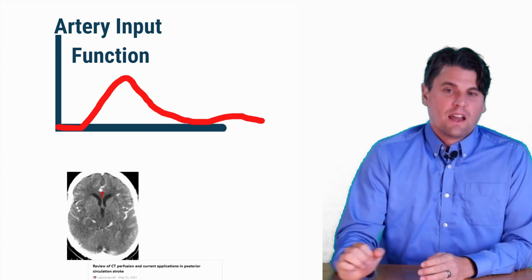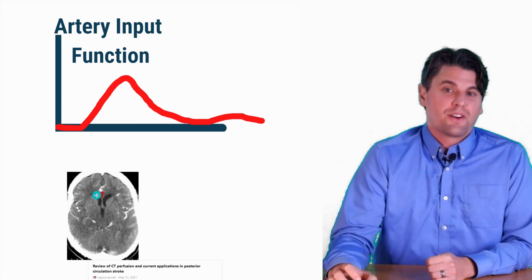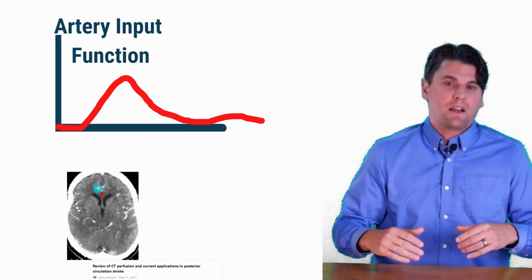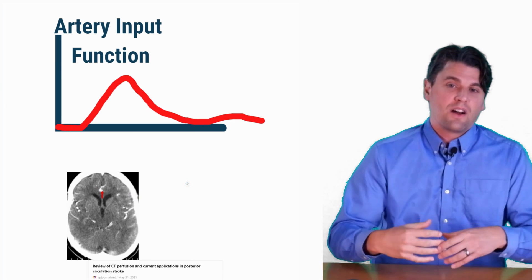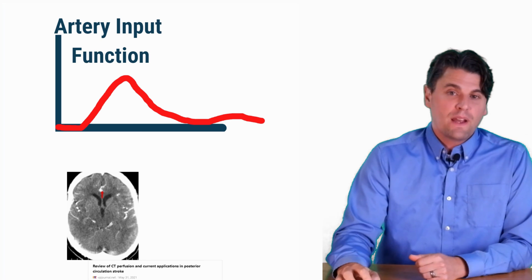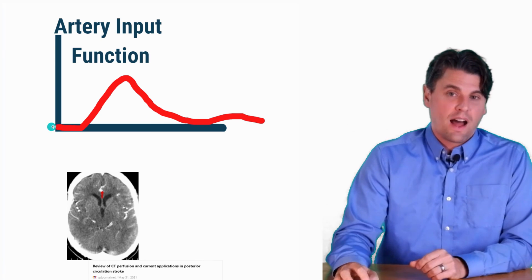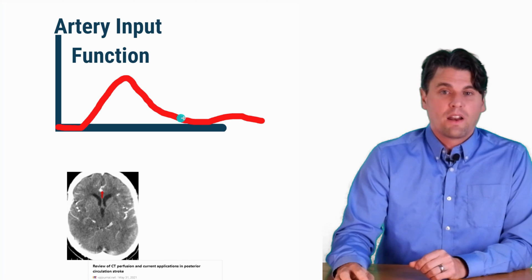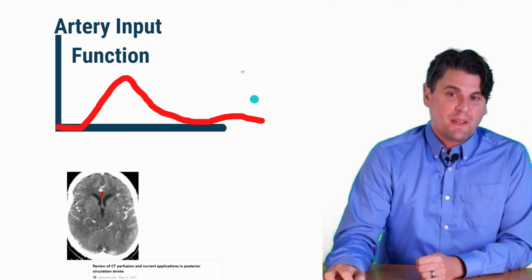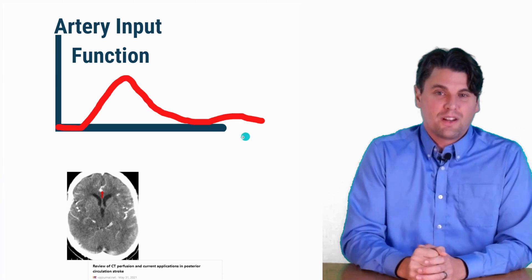So what does that look like in reality? If we put a region of interest in an artery — what we call an arterial input function — and track that region of interest to look at the CT numbers over time, it's going to look something like this: it'll go up at some time and then come back down. The peak out here is called the recirculation peak, and it's actually possible if the blood makes it through one pass around the whole circulatory system.